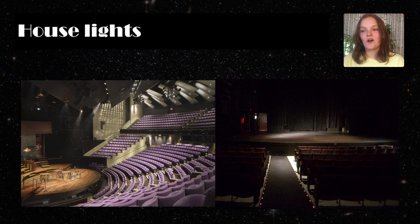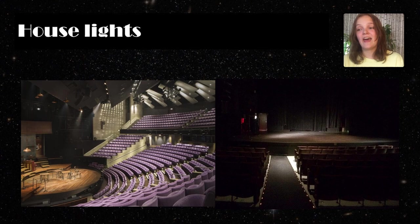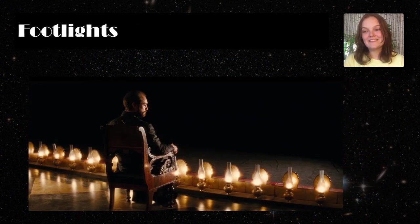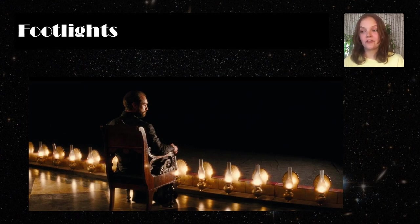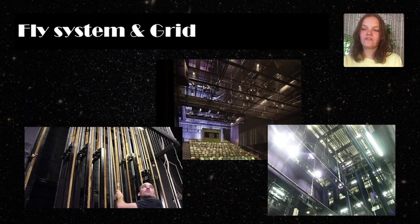House lights are the lights in the auditorium. They are turned off when the performance begins and turned back on at intermission or after the show. The footlights are a row of lights along the front of the stage at floor level, used among other things to reduce shadows cast by overhead lighting. A fly system, or theatrical rigging system, is a system of blocks, rope lines, counterweights, and other components.